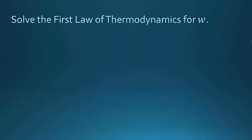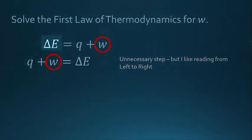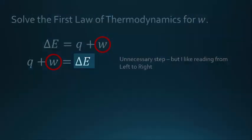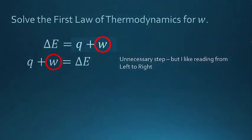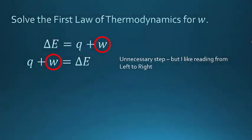Let's look at the first law of thermodynamics, and I want to solve it for W. So what I'm going to do first, to be honest, it's a step you don't have to do. It is a totally unnecessary step. But personally, I have a hard time thinking right to left. I'm used to doing left to right. So I always want my unknown to be on the left-hand side. So I took that delta E on the left-hand side and put it on the right, and I put the Q plus W that was on the right-hand side on the left-hand side.